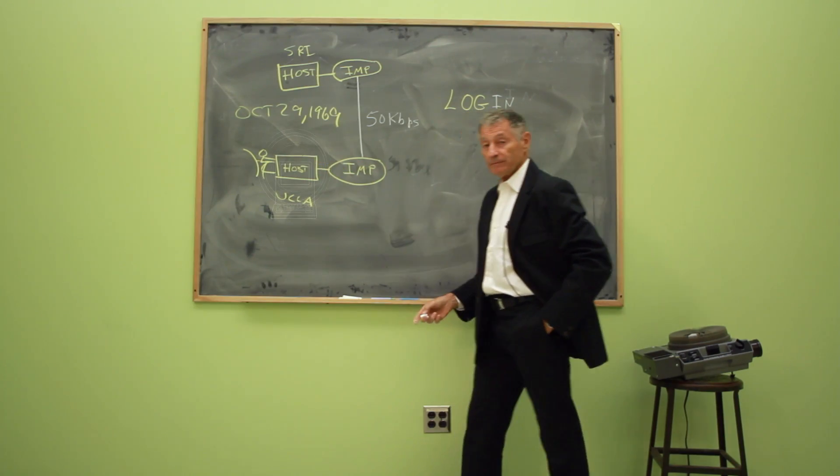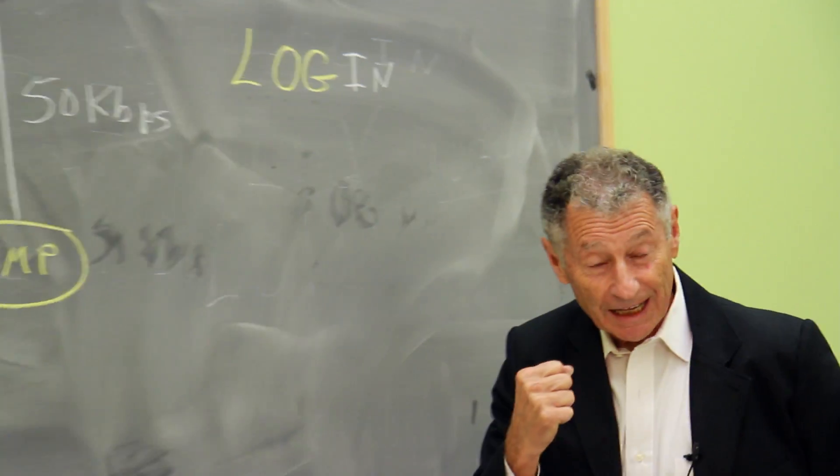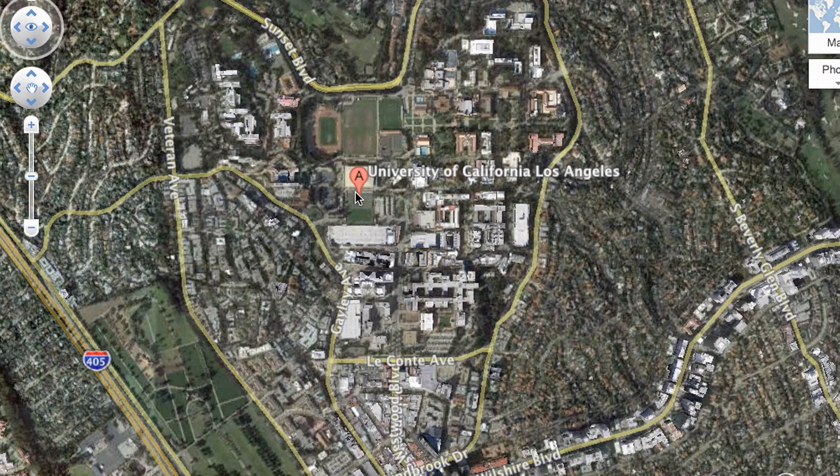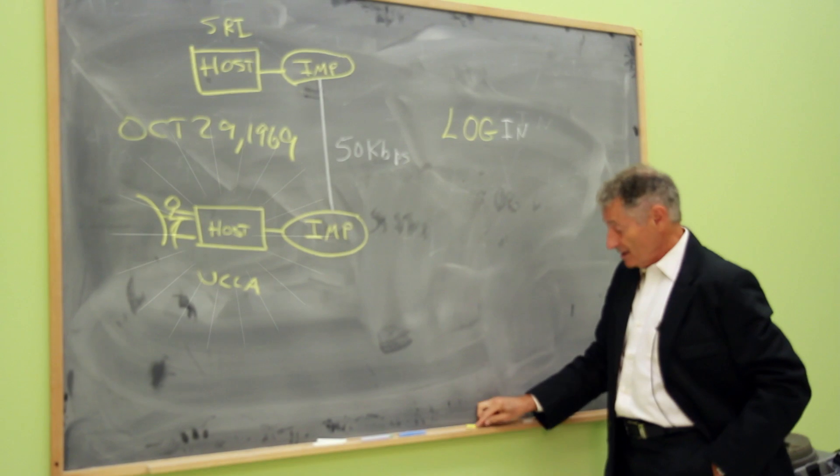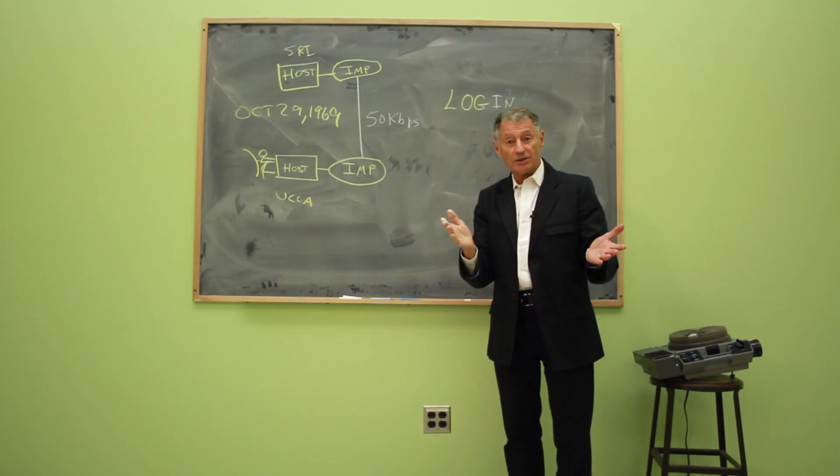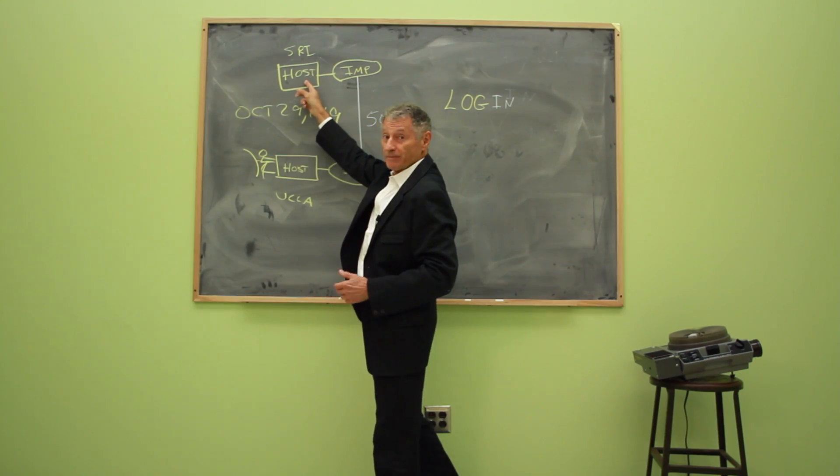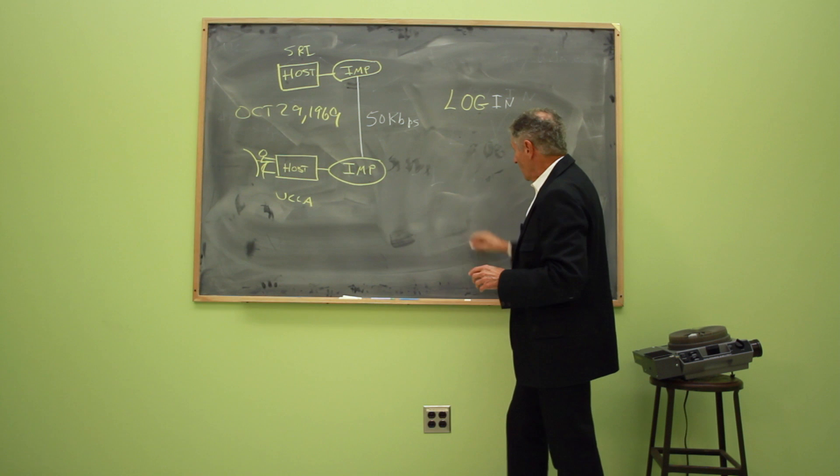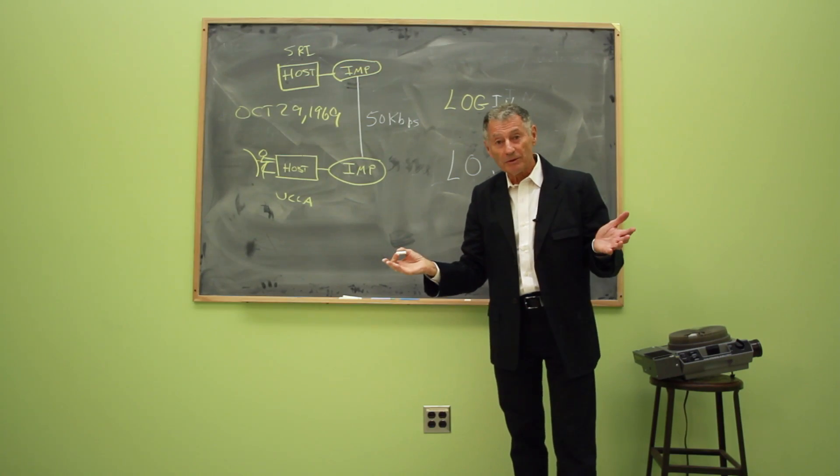So Charlie typed the L and over the phone said, got the L, got the L, got the O, got the O, got the G, crash. This machine crashed. So the first message ever on the Internet was lo, as in lo and behold.